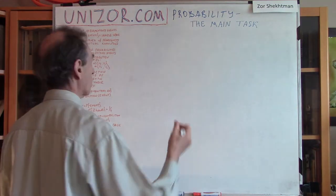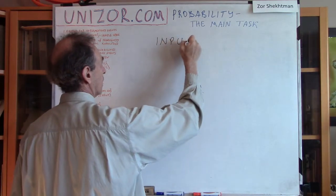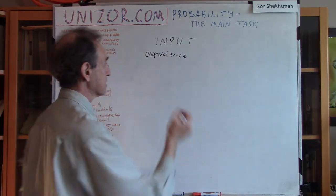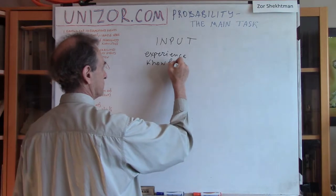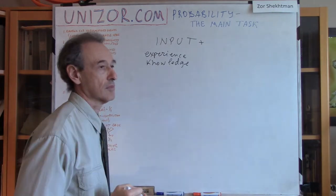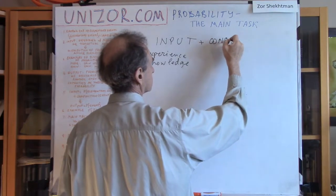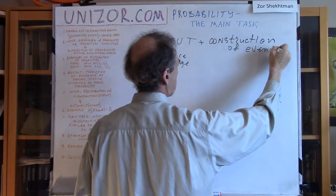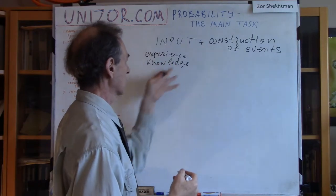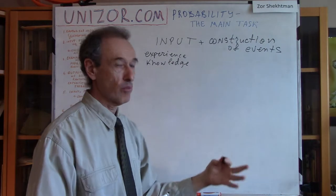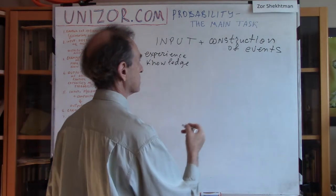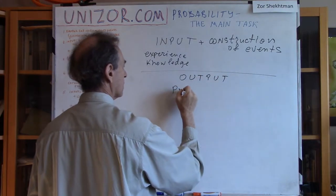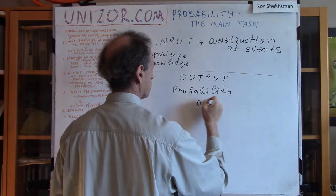Let me just summarize it. We have input into our theory, which is experience — like we observe the frequencies — and knowledge. We also have the way how we construct different events: from which elementary events, whose probabilities we know, our more complicated event is constructed. As a result of this, we come up with an output, which is the probability of different events.